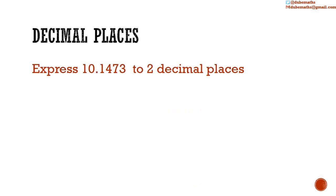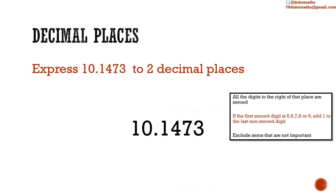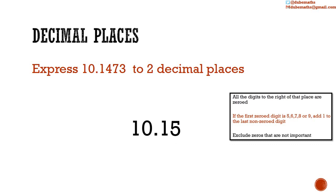10.1473 expressed to 2 decimal places: we zero all digits to the right of the second decimal place. The first digit that was zeroed is a 7, so we add 1 to 4 to get 5. We exclude the zeros that are not important, so we end up with 10.15.